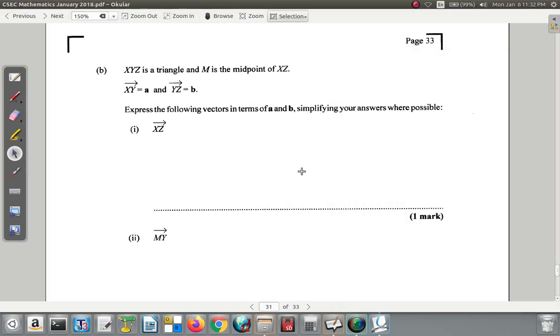Question 11B. It says XYZ is a triangle and M is the midpoint of XZ. XY is A and YZ is B. Express the following in terms of A and B, simplifying your answers where possible: XZ and MY.